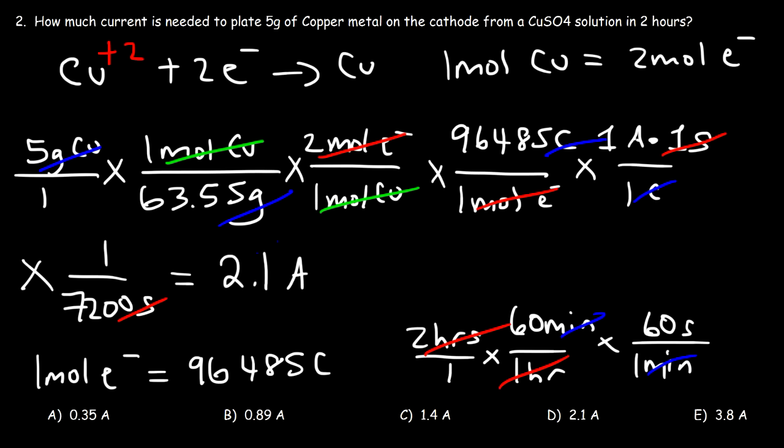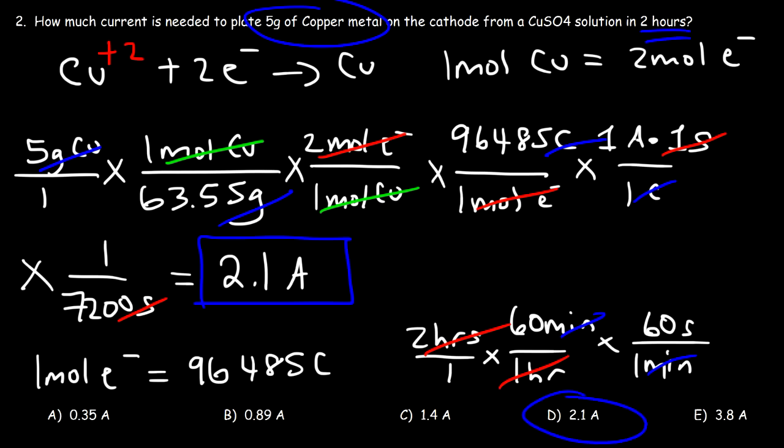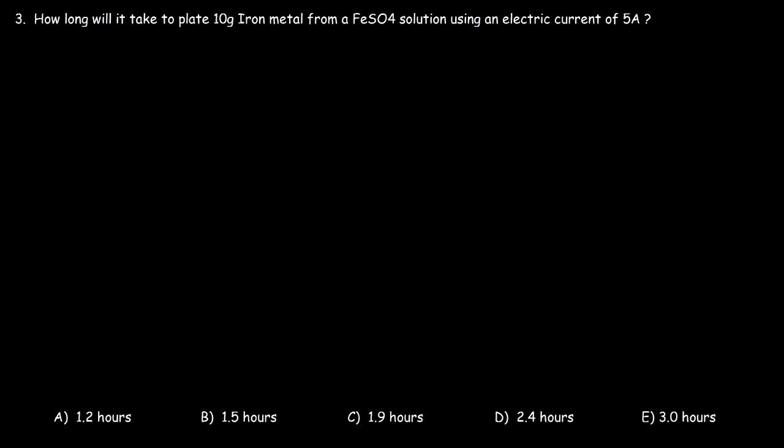So 2.1 amps is the electric current needed to apply for 2 hours to plate 5 grams of copper metal on the cathode, making D the right answer. Problem 3: how long will it take to plate 10 grams of iron metal from an iron(II) sulfate solution using an electric current of 5 amps?